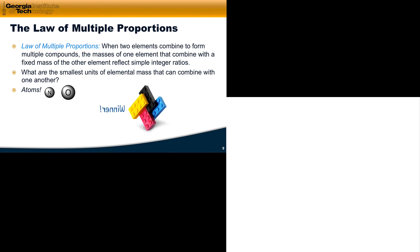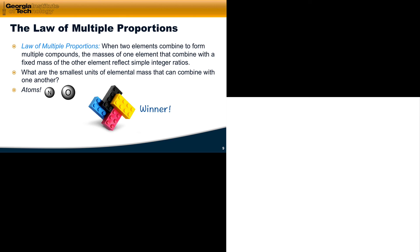So now we have a winner. The paint model cannot possibly be correct if matter is made of atoms. If matter is made of discrete chunks of mass, we can't combine elements in any mass ratio we wish — we can only take certain numbers of atoms and put them together. The law of multiple proportions says we can only combine elements in specific ratios related by simple integers: 1, 2, 4. That is strong evidence that matter is made of atoms.